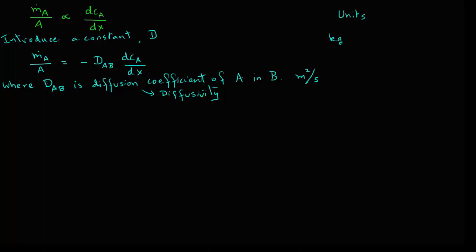Let's check out the units. On the left-hand side, M_dot_A divided by A gives kilograms per second divided by square meters. On the right-hand side, diffusivity has units of meter squared per second, concentration is kilograms per cubic meter, and X is in meters. The meter squared cancels out, giving kilograms per second per meter squared on the right-hand side — the same as on the left-hand side.